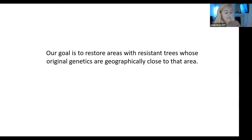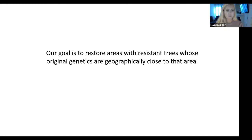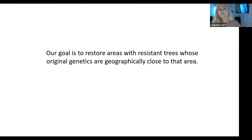Basically, with every breeding program there are three components: research, breeding, and then restoration - the actual reforestation, which is the final phase. We've really focused on the research and the breeding, in particular the breeding, and the final phase is restoration. A lot of people ask what that looks like, and I want people to understand that our goal is not to make some cultivar or magic bullet of a resistant tree.